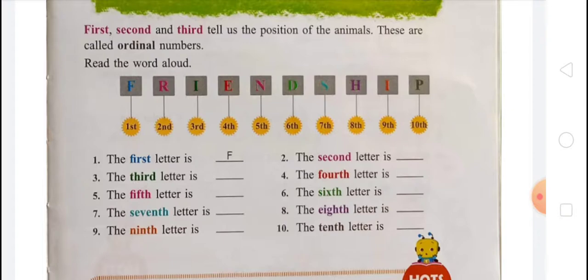Now something interesting — you can see a word here. Read the word: F-R-I-E-N-D-S-H-I-P — friendship. The word friendship has a total of 10 letters: F is 1st, R is 2nd, I is 3rd, E is 4th, N is 5th, D is 6th, S is 7th, H is 8th, I is 9th, and P is 10th.